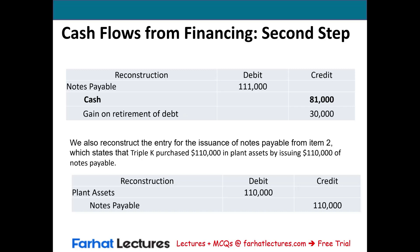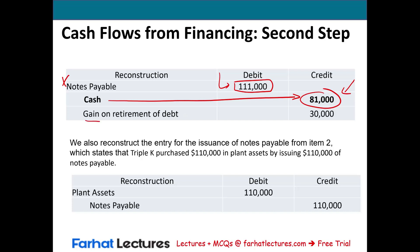When we retired the note, we paid $81,000 in cash — credit cash $81,000. The note had a book value of $111,000, so we debited notes payable $111,000 to remove it. We paid $81,000 to settle a $111,000 loan, resulting in a gain of $30,000. This gain went to the income statement and was adjusted in the operating section. For the issuance of the note: debit plant asset $110,000, credit notes payable $110,000.